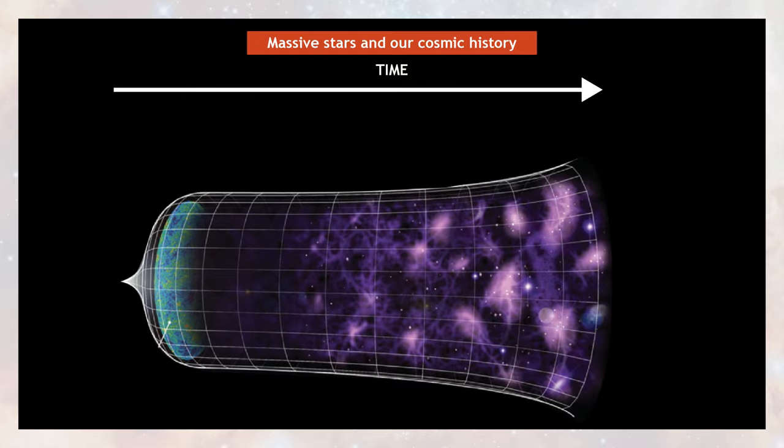Stars like these played an enormously big role in the history of our universe. Here, I show you a schematic timeline of how our universe evolved and expanded over time. Shortly after the Big Bang, the universe was dark. There were no sources of light, apart from the gradually dimming background radiation. This period is known as the Cosmic Dark Ages.